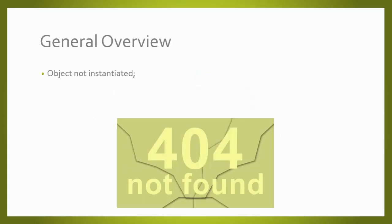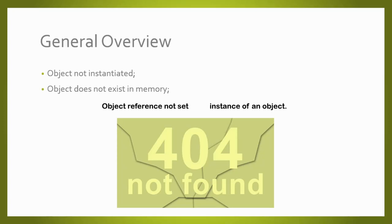Why do we face this error? Let's break down its message. This error happens because we are trying to access properties or methods of an object that's not instantiated — the object does not have an instance. It means we do not have any space in memory allocated to this object; we do not have a reference set for it. So your code will try to access properties or methods that do not exist.